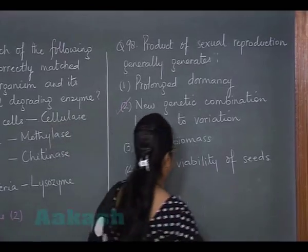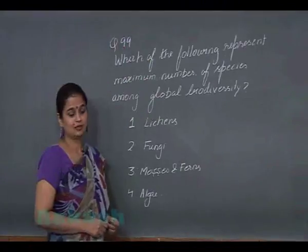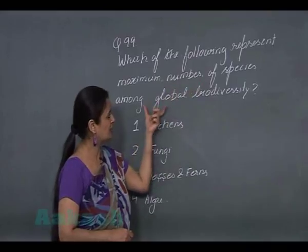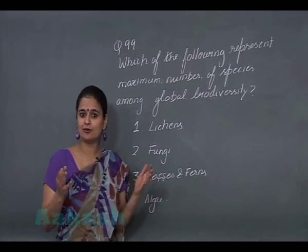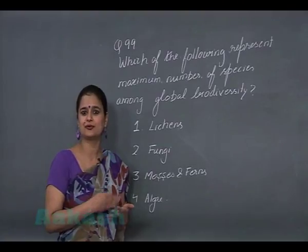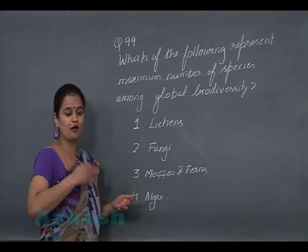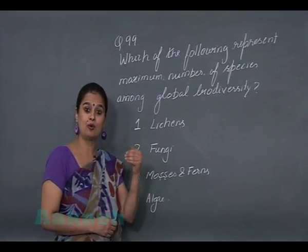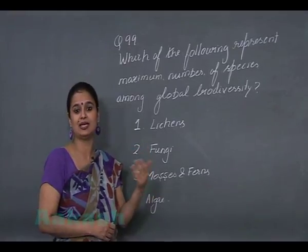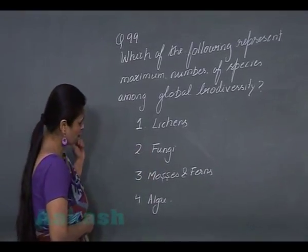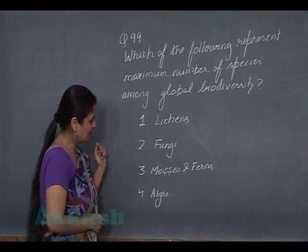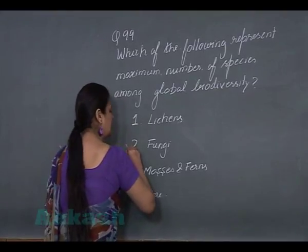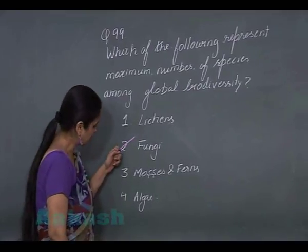Question 99: we have to select the option which represents the maximum number of species among global biodiversity. For plants, maximum biodiversity is for angiosperms — flowering plants — followed by fungi, then algae, then mosses, ferns and allies, and then lichens. Looking at the four options, the best option corresponds to fungi.